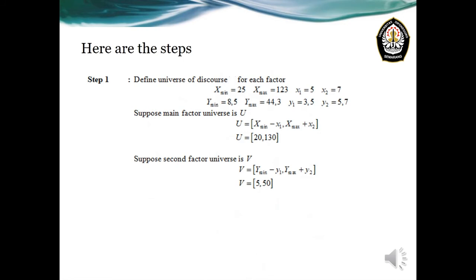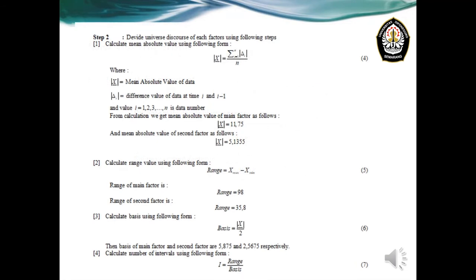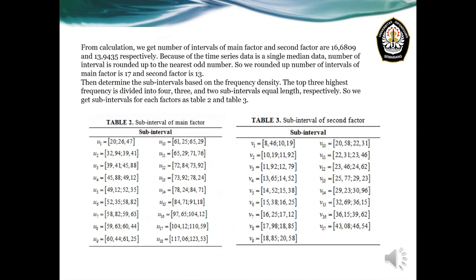In Step 1, we define the universe of discourse for each factor, using U for the main factor and V for the second factor. In Step 2, we partition using average-based interval following these sub-steps: calculate the mean absolute value, calculate the range value, calculate the basis, and calculate the number of intervals. From these calculations, we get the number of intervals for the main factor data as 16.6809 and for the second factor data as 13.9435.